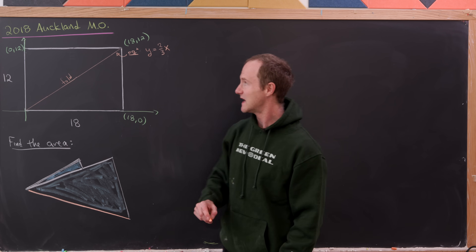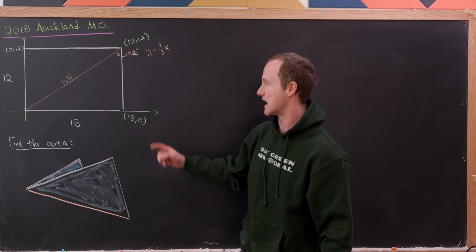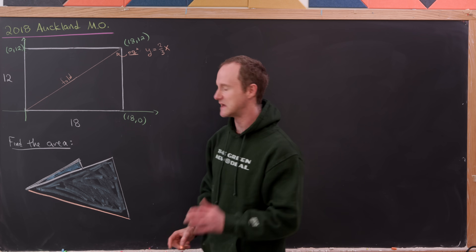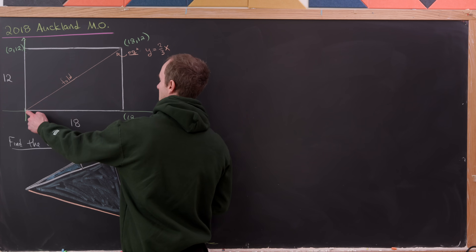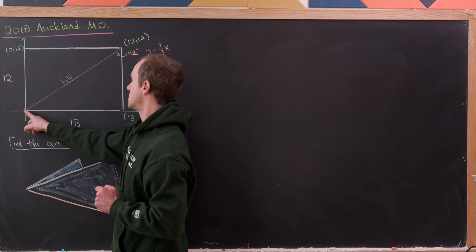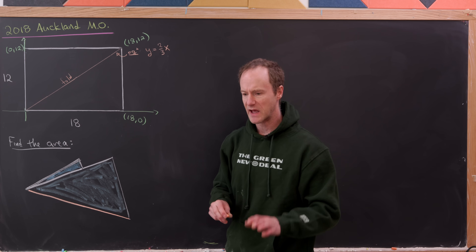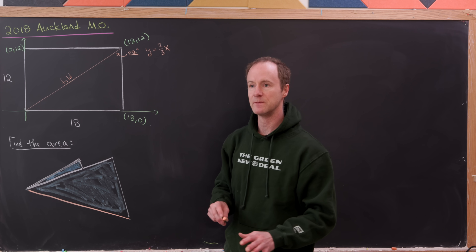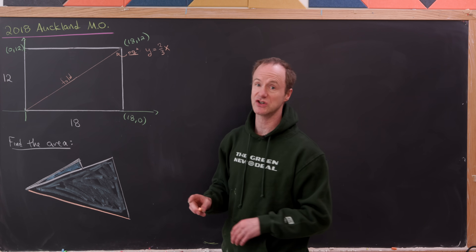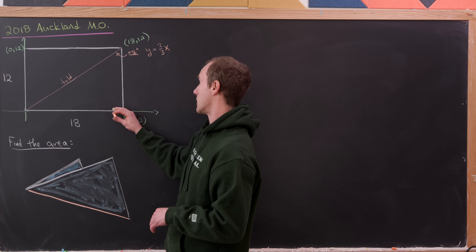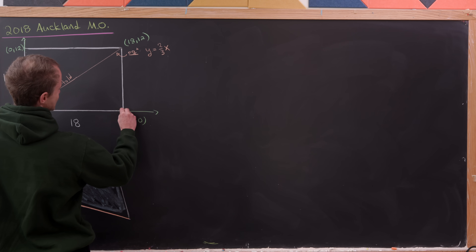The strategy we'll take is to reflect the bottom half of our rectangle across the folding line. We really only need to reflect the point (18, 0), because a straight line from the origin to (18, 0) will become a straight line from the origin to wherever that reflected point lands, and we can fill in the rest from there. The reflection of this point will occur along a line that goes through (18, 0) and is perpendicular to y = (2/3)x.